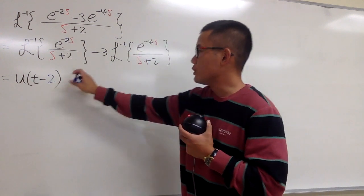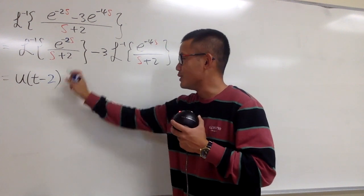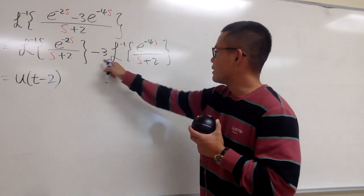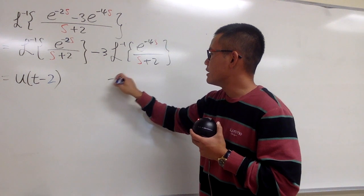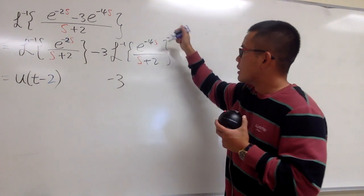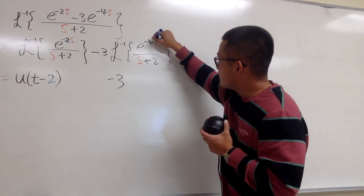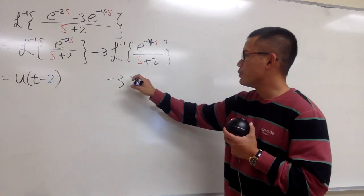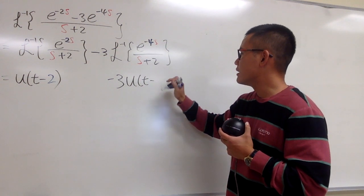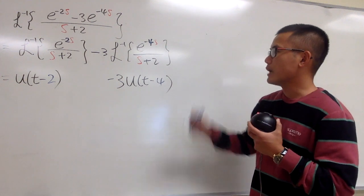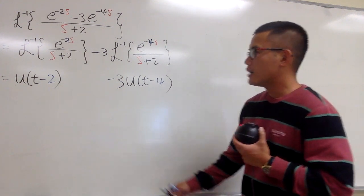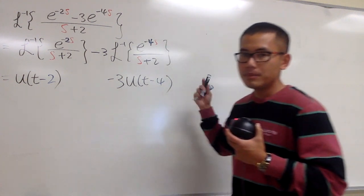I'll also write this down, and we need more functions here. Let me write this down. We have the negative 3. The a value is positive 4, that means I must have u of t minus 4. Now I have to figure out what function are we talking about.